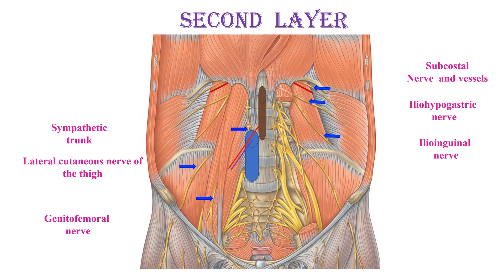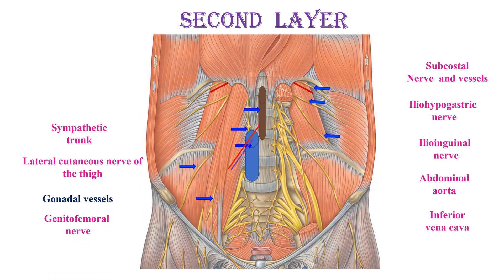Remember, you can see here that the right sympathetic trunk is under the right edge of the inferior vena cava — you have to remember that. That is the abdominal aorta shown as a line, and the inferior vena cava lying in front of the sympathetic trunk. The gonadal vessels are also in front of the psoas major. Above, the subcostal nerve and vessels come deep to the lateral arcuate ligament. So, the second layer is formed of a number of nerves and vessels.